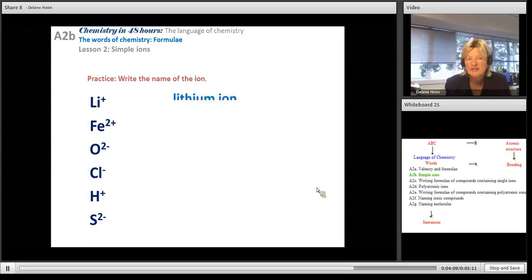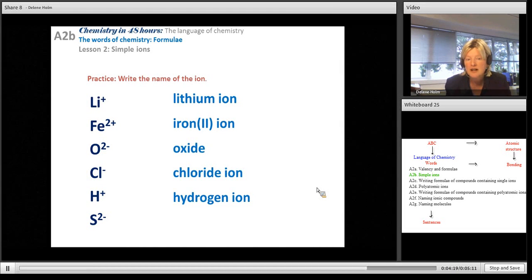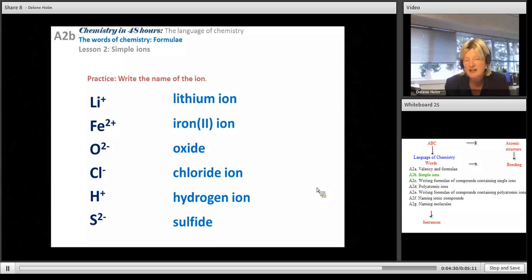Here are the answers. Lithium ion. Iron 2. Don't forget those Roman numerals in brackets. Oxide. Chloride. Hydrogen. And sulfide. For the anion you don't have to write the word ion. I know I've done it for chloride ion just to show you could do both, because the fact that it's an ion is already shown in the IDE.